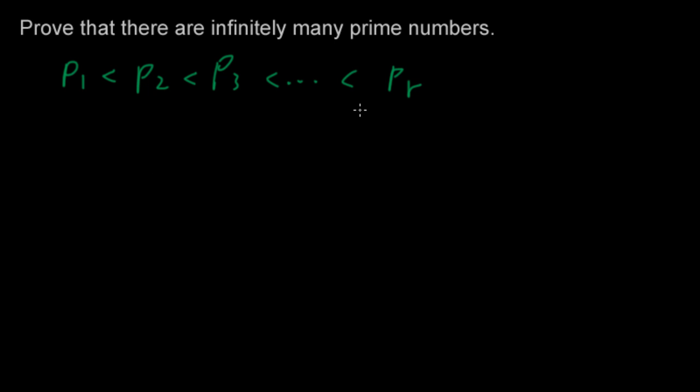Now this sequence includes every single prime number there is. So any other integer greater than 1 and not in this sequence is a composite number.